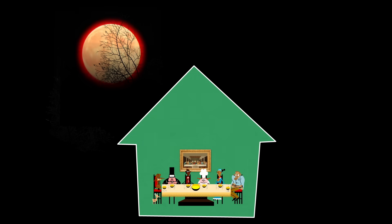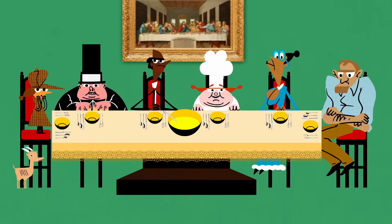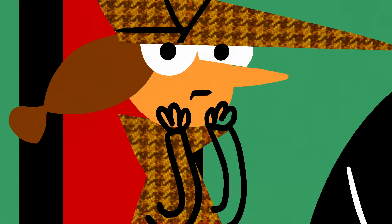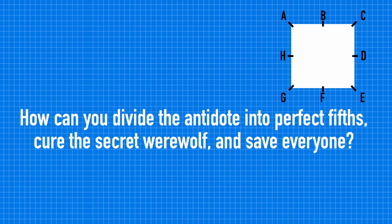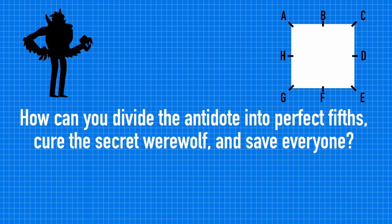The full moon is rising, and in a moment someone will transform and tear you all apart, unless you can cure them first. How can you divide the antidote into perfect fifths, cure the secret werewolf, and save everyone?